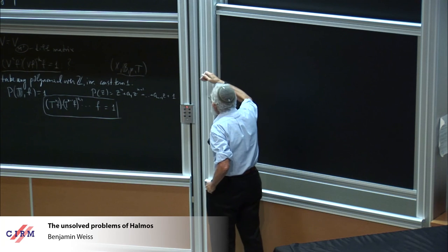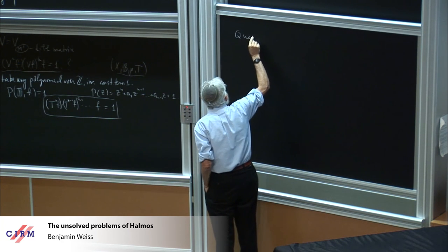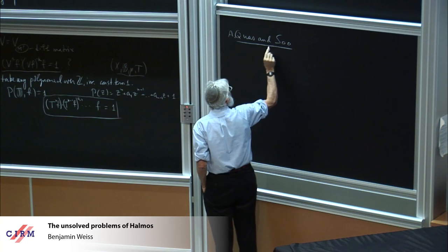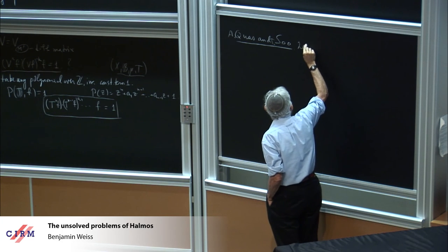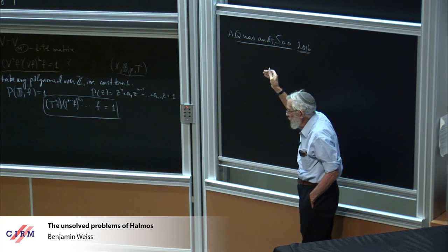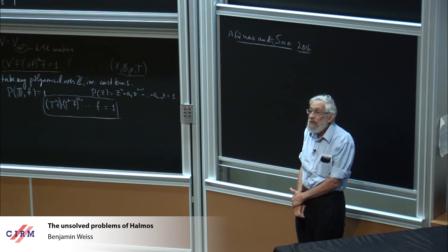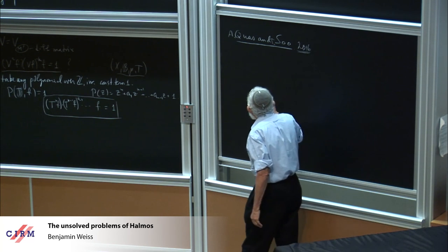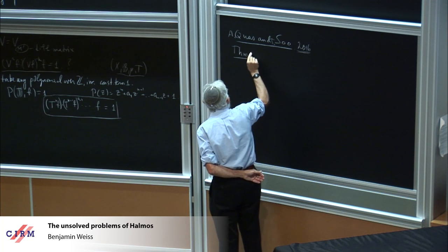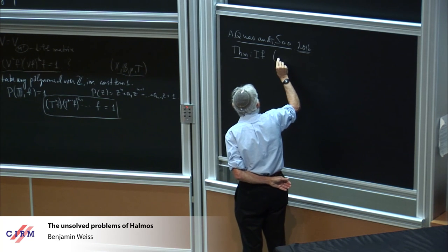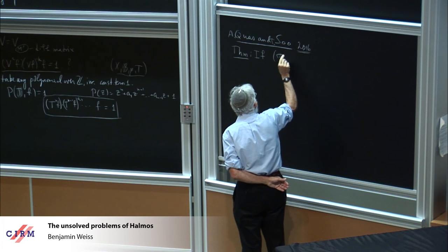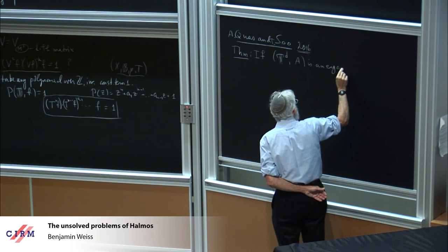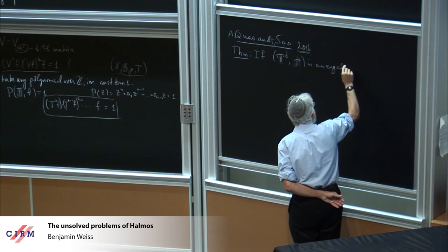What this means is that if the polynomial T of Z is Z to the N plus A1 Z to the N minus one plus A_N minus one Z plus one, then what this means is that you're looking at T to the N F times T to the N minus one F to the A1 times F is equal to one. You're looking at this equation and you're asking when does a system, when does a measure preserving transformation have a function of unit modulus which satisfies such an equation? So this is clearly an isomorphism invariant. He was looking for invariants.